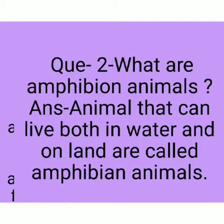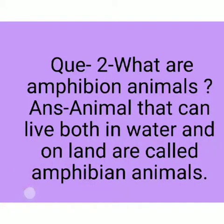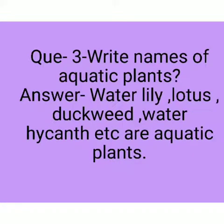Question 2: What are amphibian animals? Answer: Animals that can live both in water and on land are called amphibian animals. Children, you know this very well — I taught you in the previous class. For example, frog, turtle, crocodile, etc.